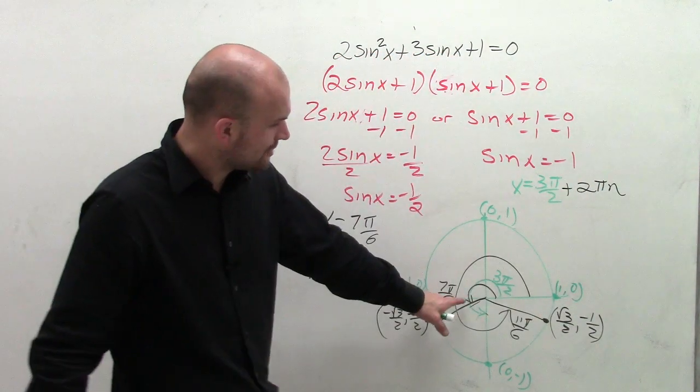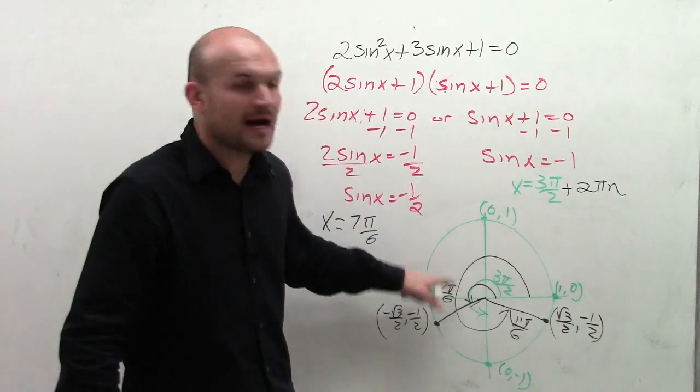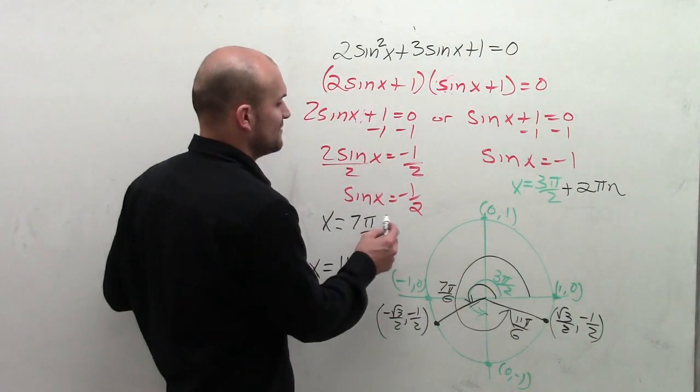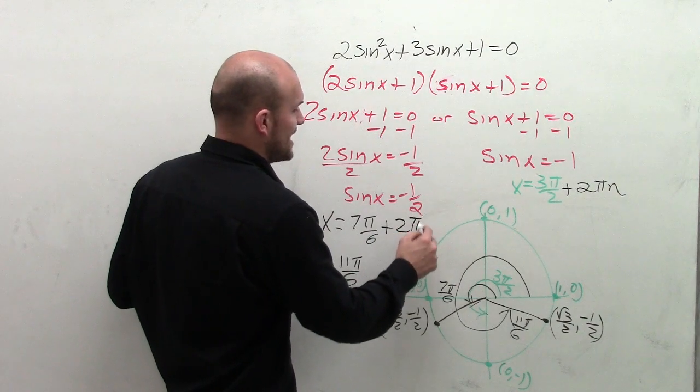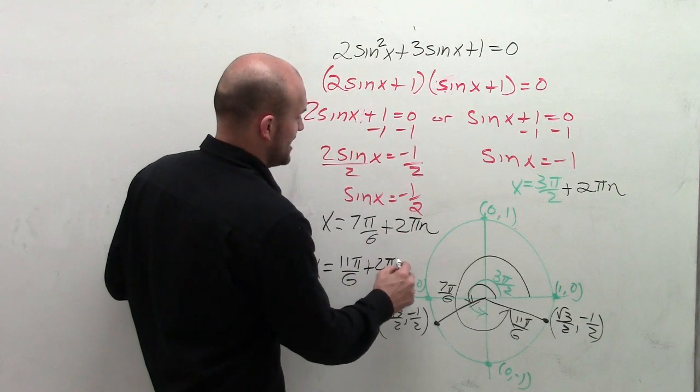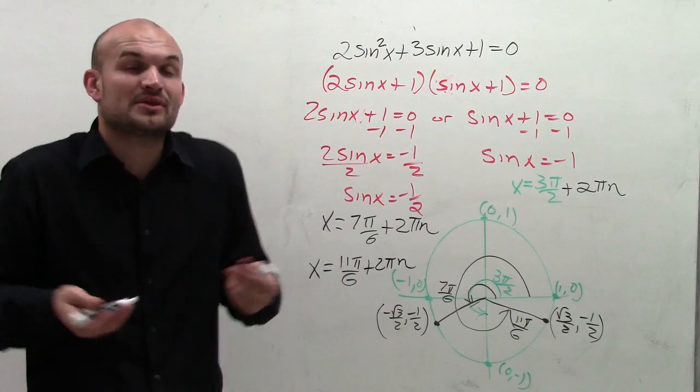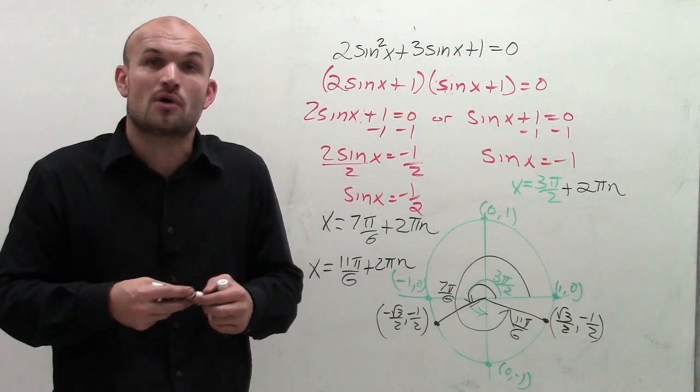And for each one of these angles, you can see that if I keep on adding 2 pi, I'm always going to get the value when sine of x equals negative 1 half. So for these two, I'm going to add 2 pi n and plus 2 pi n. And I add n because, remember, there's infinitely many coterminal angles for our sine function.